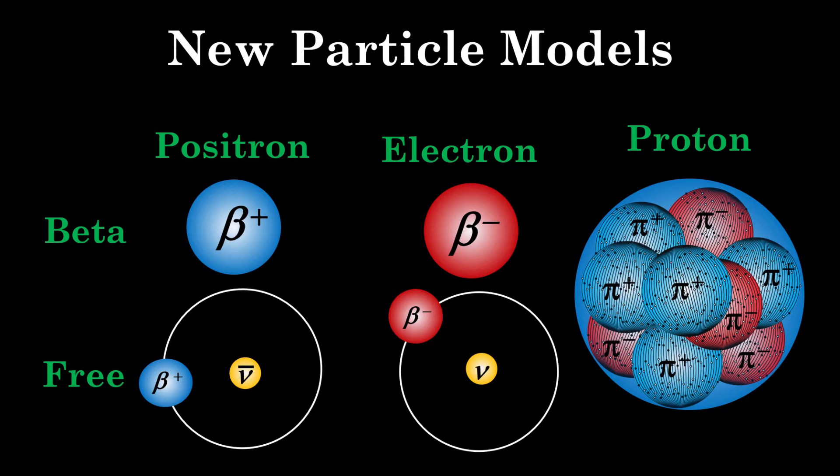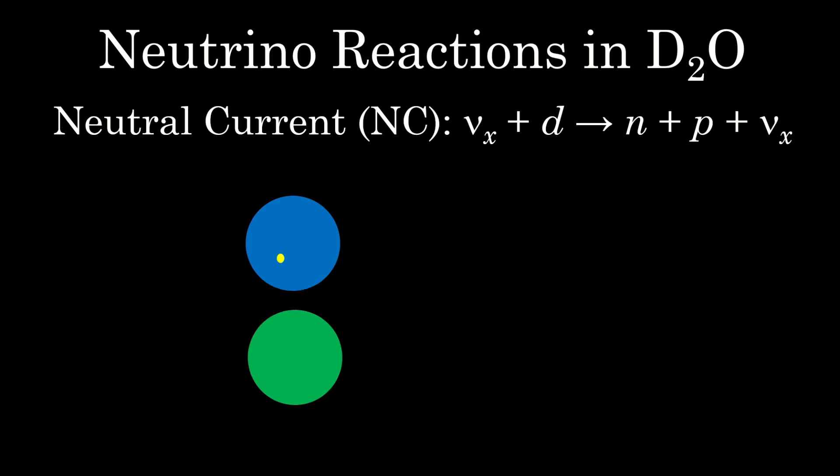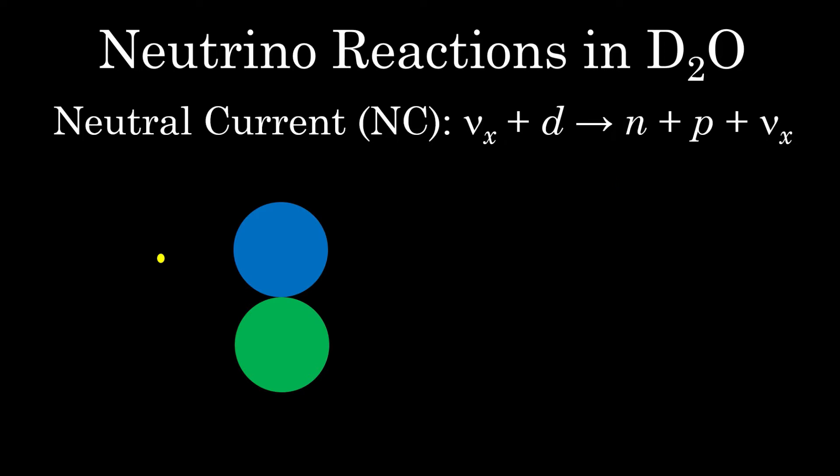With our new models of the proton and electrons, is it now possible to propose likely mechanisms for how the various neutrino detector materials actually see neutrinos? To see, let us first consider the two neutrino reactions that occur within the deuteron: the neutral current and charged current reactions.